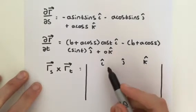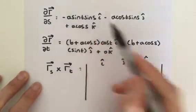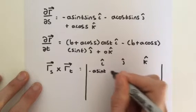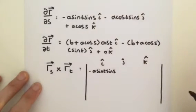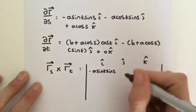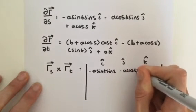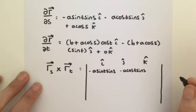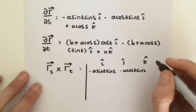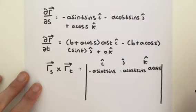So, the i component of our partial derivative of the vector s, that's simply this term here. We get minus a sine of t, sine of s. Then we have our j component, which is another minus. Minus a cosine of t, sine of s, and then we have our k component. We're running out a bit of room here, but our k component is simply a cosine of s.